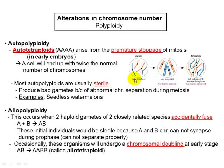This is not very common in animals, but it can be manipulated in the case of crops. One example of this type of manipulation is seedless watermelons — an example of autotetraploidy or autopolyploidy.